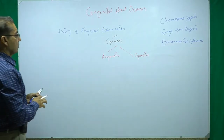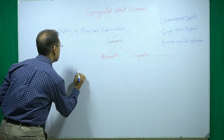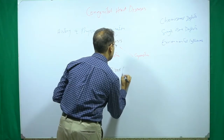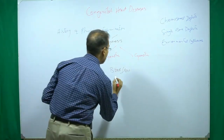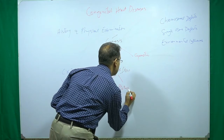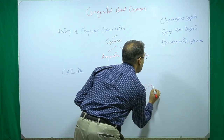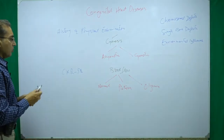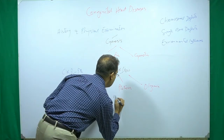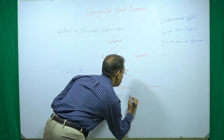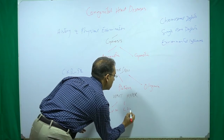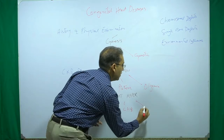The second screening modality we use is chest X-ray, where we assess pulmonary blood flow — whether it is normal, high flow (called plethora), or low flow (called oligaemia). Then we use ECG, where we look for the presence of ventricular hypertrophy — whether it is RVH, LVH, or biventricular hypertrophy.